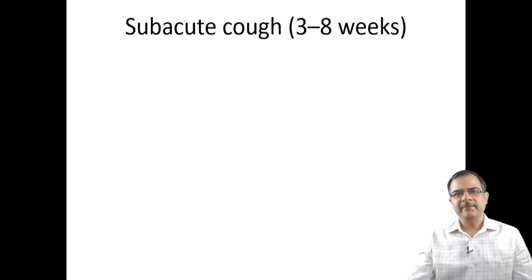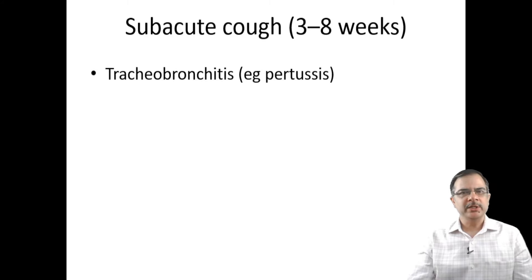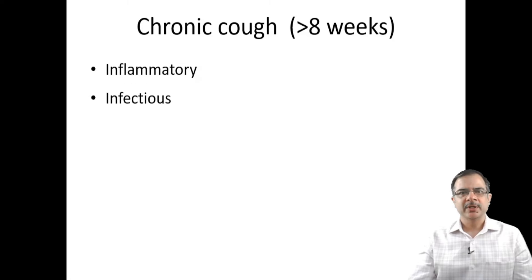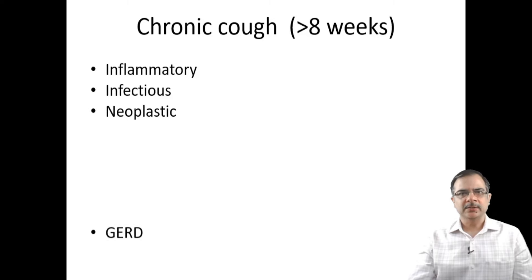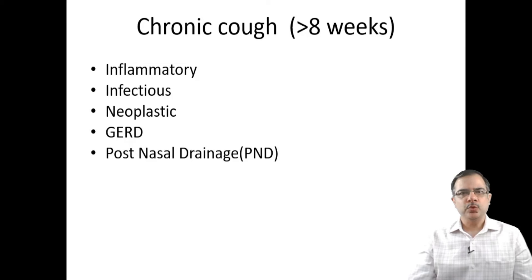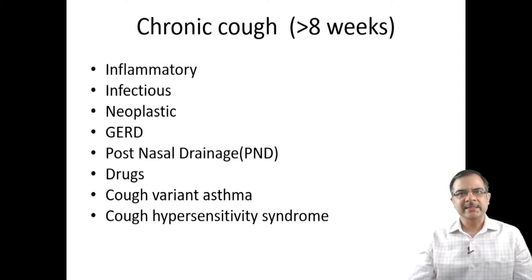Subacute cough is three to eight weeks in duration, mostly post-viral etiologies. Chronic cough is more than eight weeks in duration. Causes include inflammatory conditions like interstitial lung diseases and vasculitis, chronic infections like tuberculosis, neoplastic causes such as CA lung, GERD, post-nasal drip, drugs like ACE inhibitors, cough variant asthma, cough hypersensitivity syndrome, and cardiovascular etiologies.